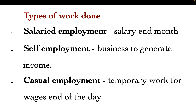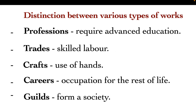The last time we were here, we talked about the different types of work done. We talked about salaried employment — salary at the end of the month. We talked about self-employment, which is a business through which we generate income. We also talked about casual employment — a temporary job where you get wages at the end of the day.